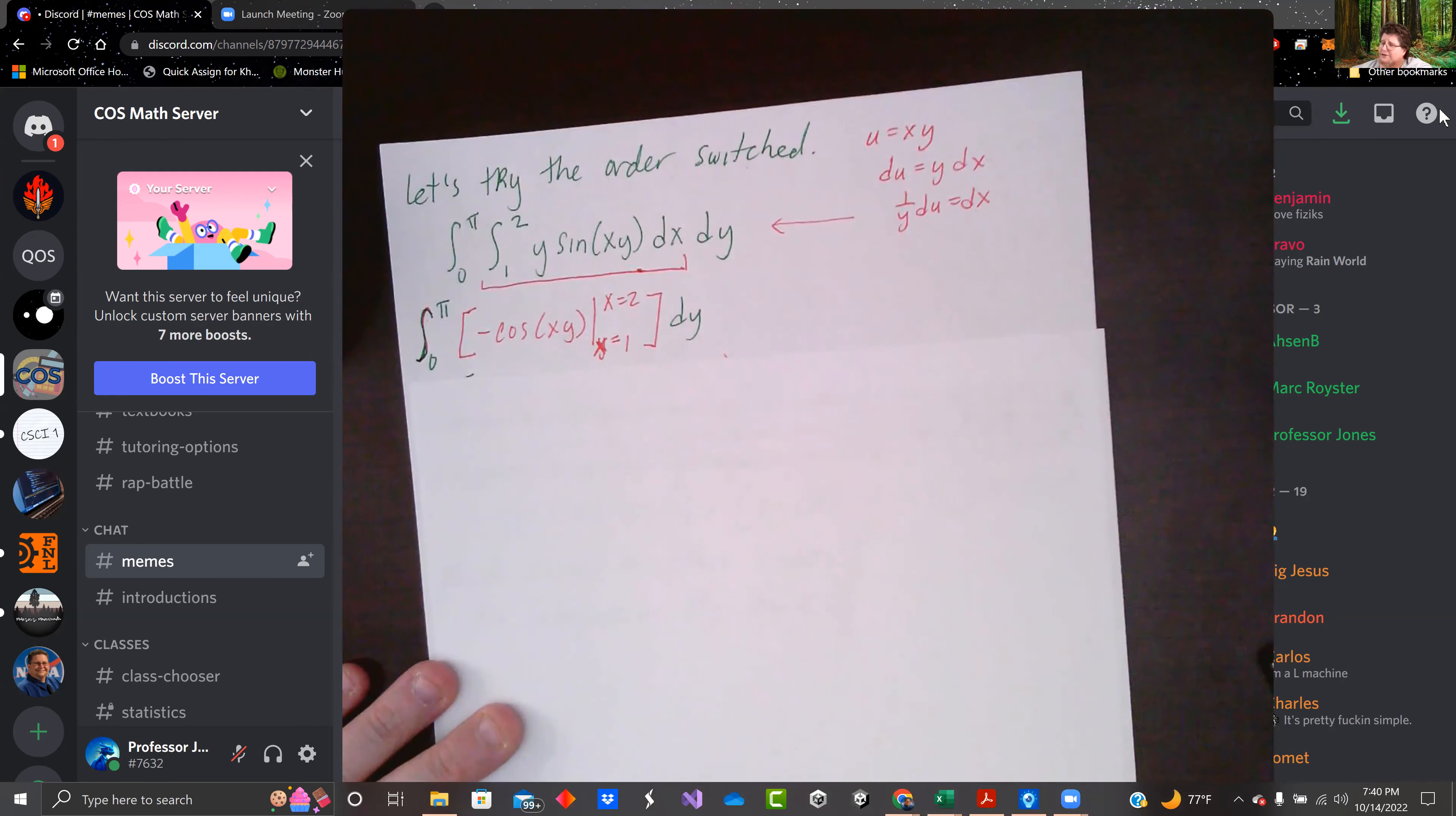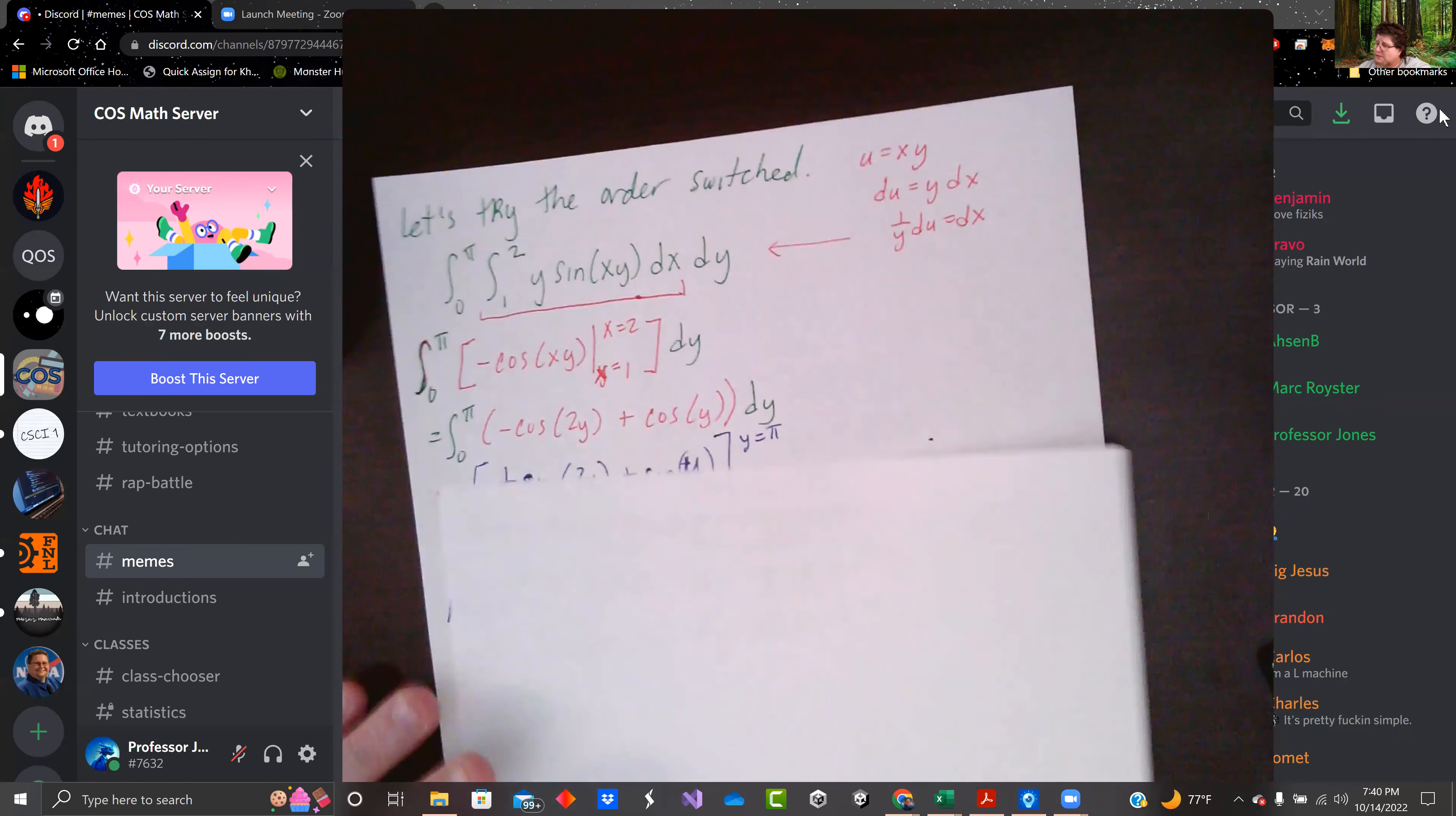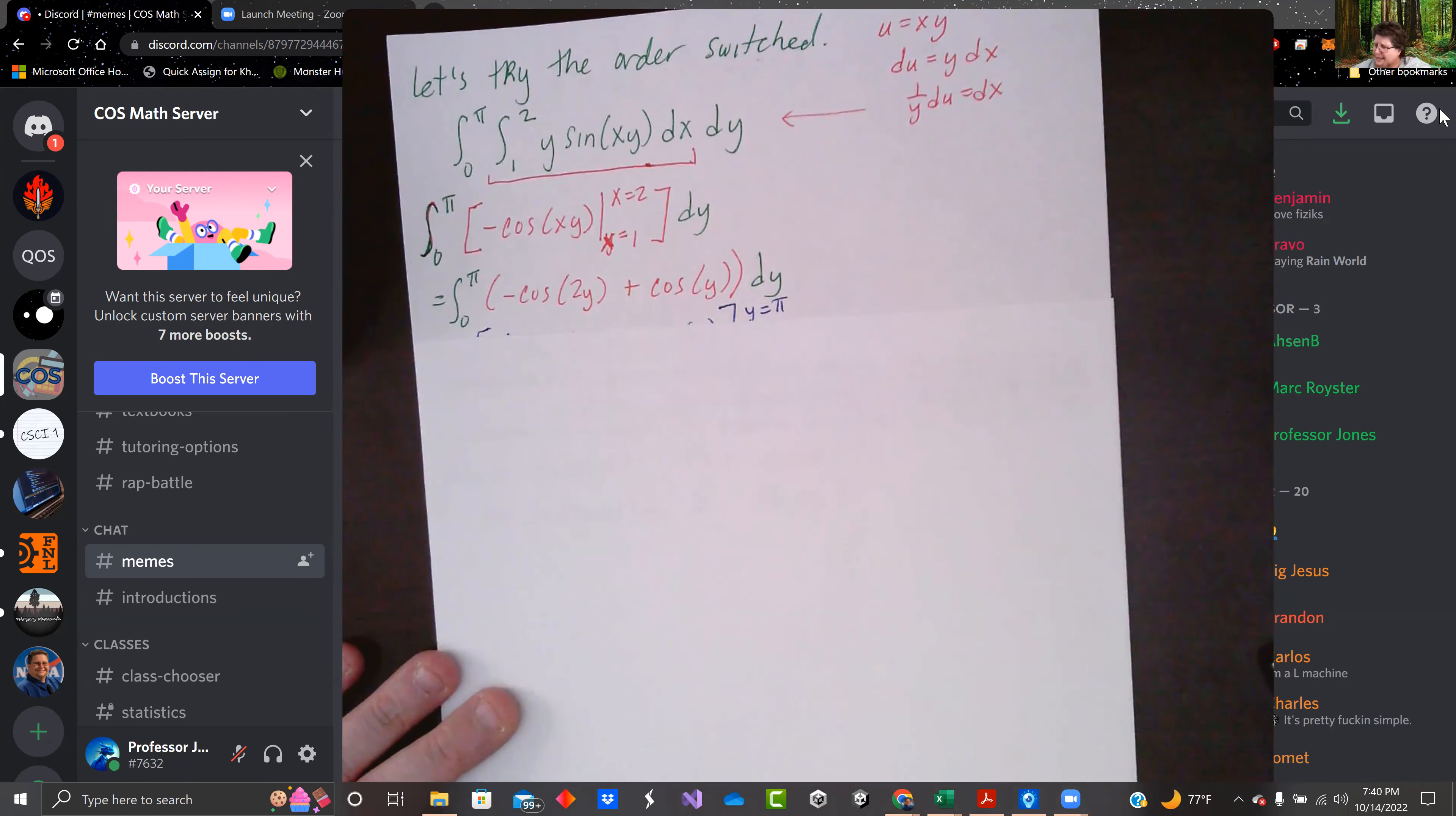We integrate sine of u. We get negative cosine of u. I put u back in as xy. Integrate from x equals 1 to 2. And we get negative cosine 2y plus cosine y. Integrate that from zero to pi.